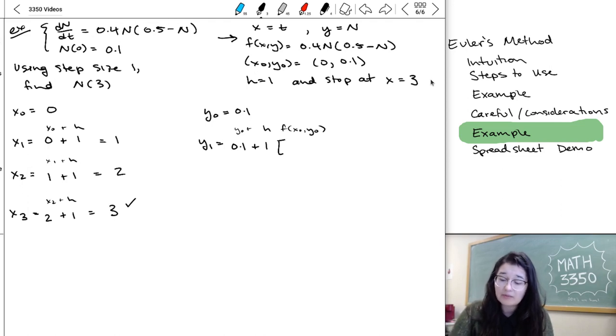And in this example, we actually don't have x0, we only have to plug in y, or the n. So it's 0.4 times my previous value, which is 0.1, times 0.5 minus my previous value, which is 0.1. And when you plug that into a calculator, you get 0.116.